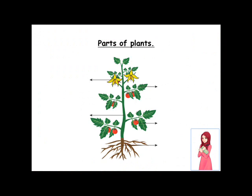Let's look at parts of plants. This is flower. This is leaf. This is stem. This is fruit. And this is root.